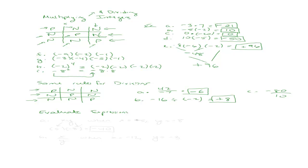One of the other things we're going to do is evaluate expressions. Let's evaluate x times y when x equals 5 and y equals negative 8. If x is positive 5 and y equals negative 8, I'll rewrite this with parentheses: positive 5 times negative 8. Positive times a negative is a negative, and 5 times 8 is 40, so the answer is negative 40. Now try: evaluate x divided by y when x is negative 12 and y is negative 3.